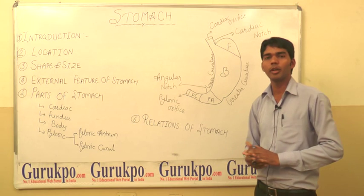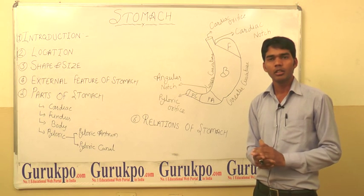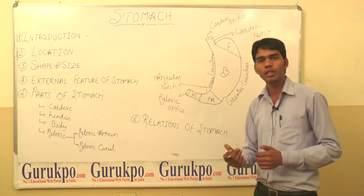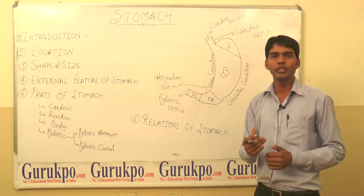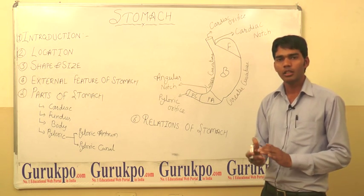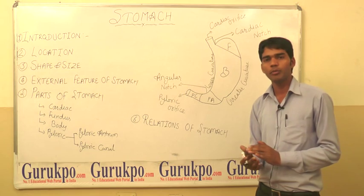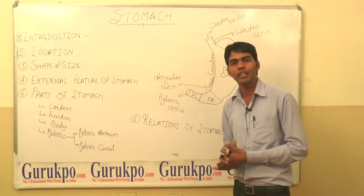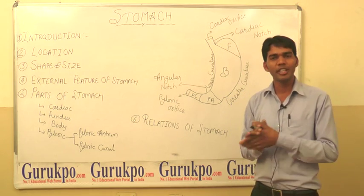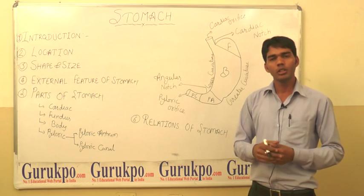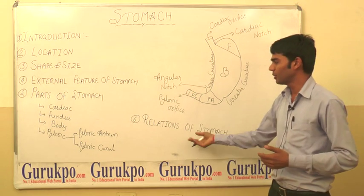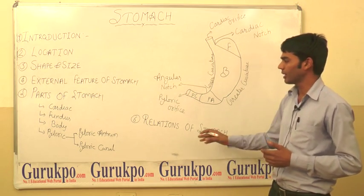On the posterior side of the stomach, the stomach has structures which form the stomach bed: the diaphragm, left kidney, left suprarenal gland, spleen, splenic artery, and the pancreas, all situated on the posterior side of the stomach.